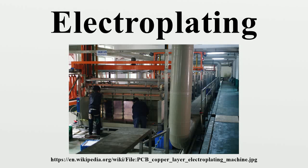Electroplating is a process that uses electric current to reduce dissolved metal cations so that they form a coherent metal coating on an electrode. The term is also used for electrical oxidation of anions onto a solid substrate, as in the formation of silver chloride on silver wire to make silver-silver chloride electrodes. Electroplating is primarily used to change the surface properties of an object, but may also be used to build up thickness on undersized parts or to form objects by electroforming.